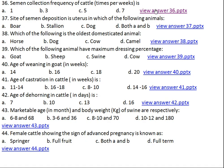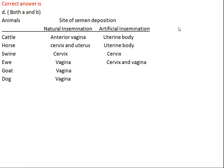Question number thirty-seven: site of semen deposition in uterus occurs in which of the following animals? Option A: boar, Option B: stallion, Option C: dog, Option D: both A and B. In natural insemination, in cattle, ewe, goat, and dog the site of semen deposition is the vagina. In horse and swine it is the cervix and uterus. In artificial insemination, in cattle and horse the site is the uterine body. In swine it is the cervix, and in ewe it is the cervix and vagina.